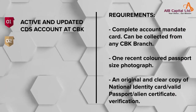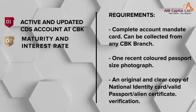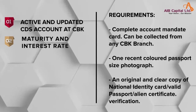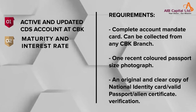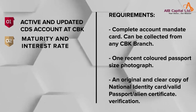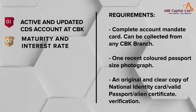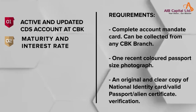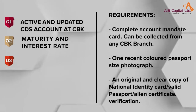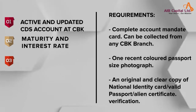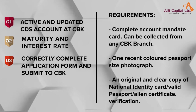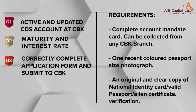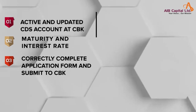Step two: decide on the maturity and interest rate that you prefer on your investment. This is based on how long you can commit your funds for and the interest rate on similar T-bonds and bills of that length of time. Step three: investors must correctly complete the T-bonds or T-bills application form and submit it to the Central Bank.